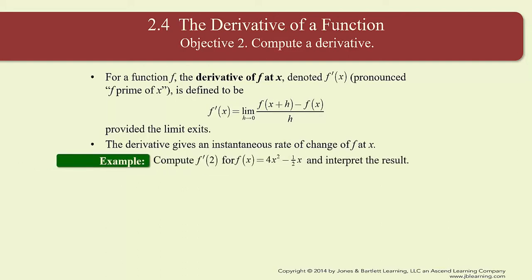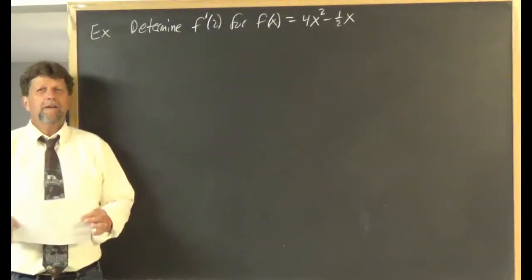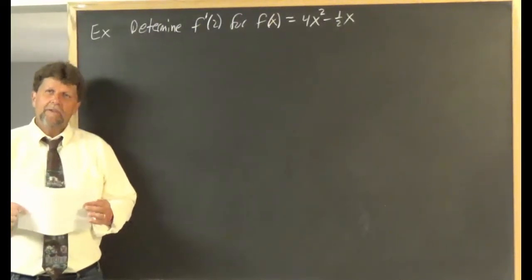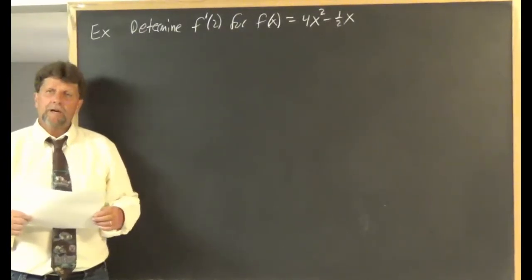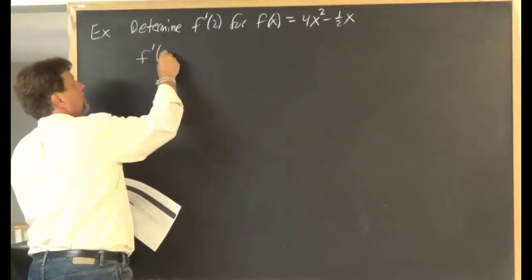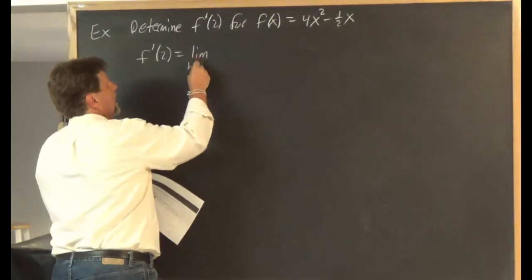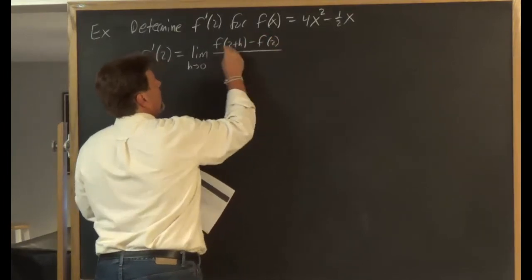Let's determine f prime of 2 for the function f of x equals 4x squared minus one-half x, and we'll interpret the result. We've just been introduced to one of the huge definitions in all of calculus — the definition of the derivative. Following the definition, f prime of 2 equals the limit as h approaches 0 of f of 2 plus h minus f of 2, all over h.